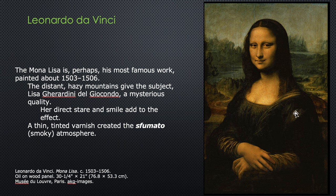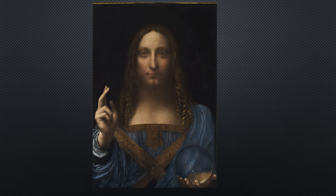The sfumato modeling of the Mona Lisa is a very subtle shading around her facial features and her neck — not dramatic, but very subtle, and Leonardo rather specialized in that. Her smile owes quite a bit to that modeling: in the upper corners of her mouth there's just a hint of shadow applied there that gives her that so-called mysterious smile.